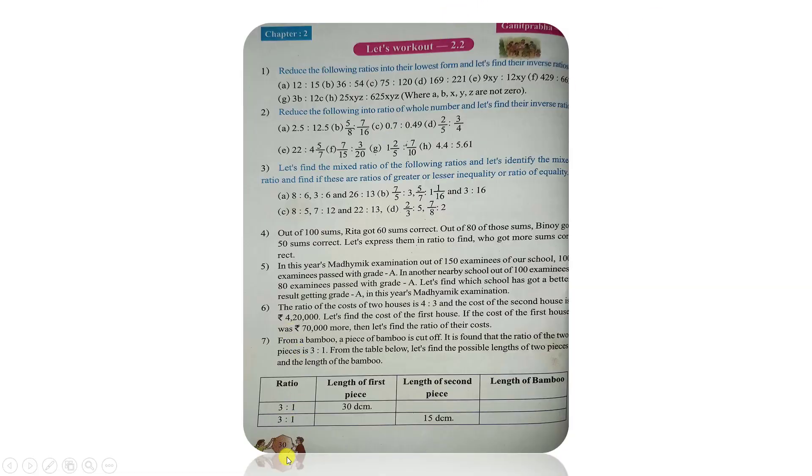Now in our book page number 30, Let us work out 2.2. Here about ratio, how to make. Simplest form.